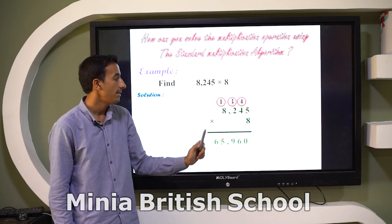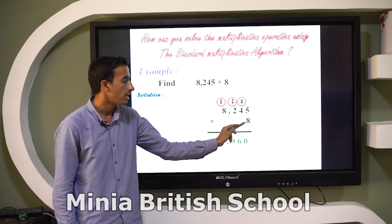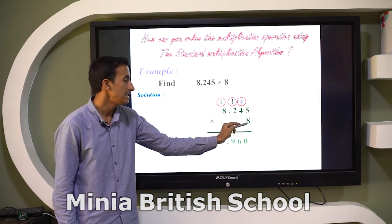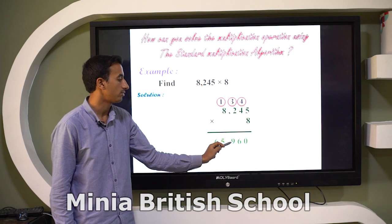So two times 8, yes, it's equal to 16 plus 3, it's equal to 19. Write 9 and carry up 1.